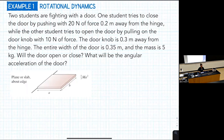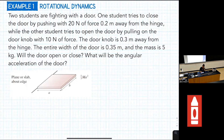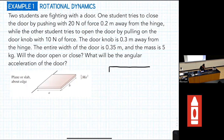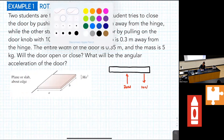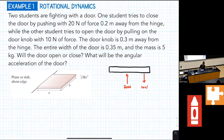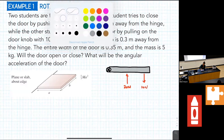The problem gives us the moment of inertia, so we don't have to calculate that using an integral, which is nice. We'll start by drawing a picture of the door to represent what's happening with the forces. We have a 20 newton force here in the middle and a 10 newton force at the doorknob. Our pivot point is on the hinge — let me draw it in a different color, purple.